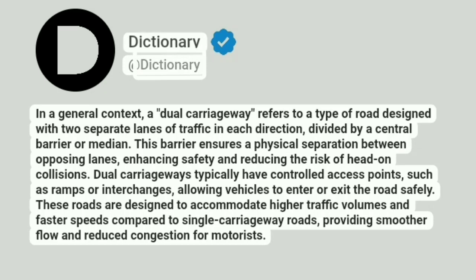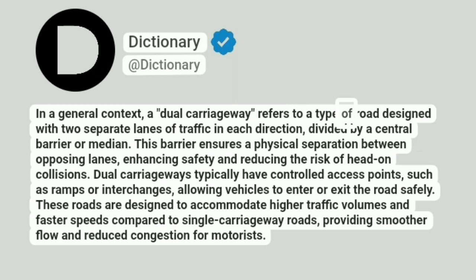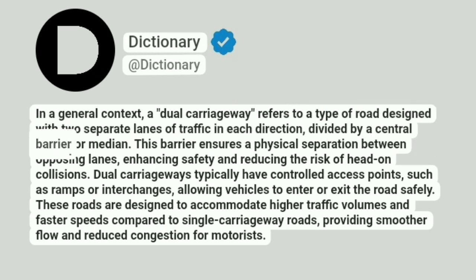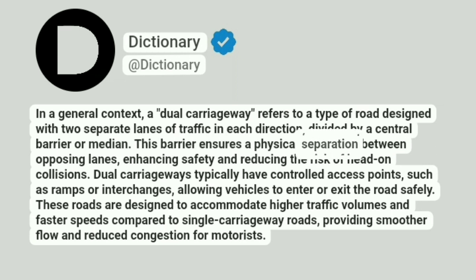In a general context, a dual carriageway refers to a type of road designed with two separate lanes of traffic in each direction, divided by a central barrier or median. This barrier ensures a physical separation between opposing lanes, enhancing safety and reducing the risk of head-on collisions.